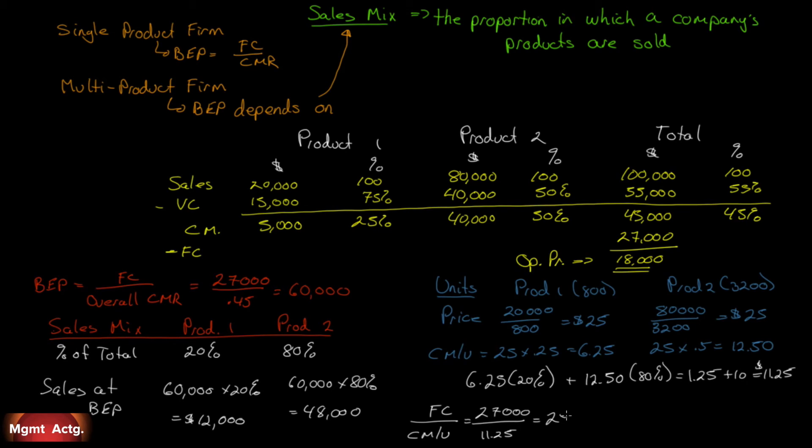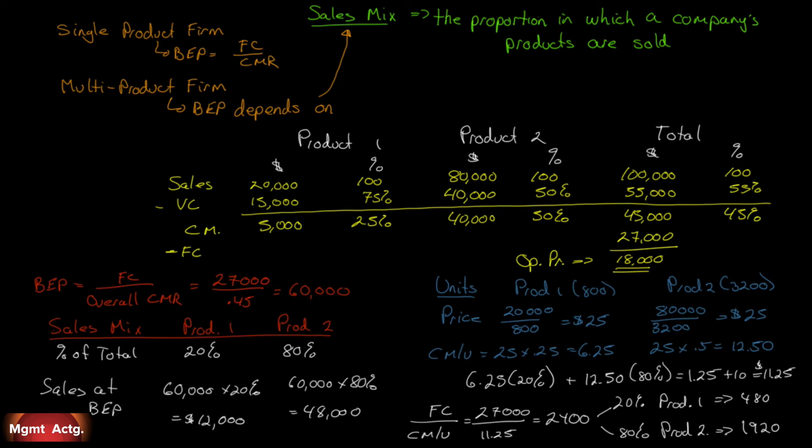That 2,400 units, 20% of that will be product one, 80% will be product two. We just do the math. This is a long way around. I don't like this way. You've got to know how to do it. You really should have the flexibility of saying, look, I've got the power to go in any direction I want. But once we have the break-even point in dollars and we figure out product one and product two, we simply just divide by the selling price and we'll have our units.